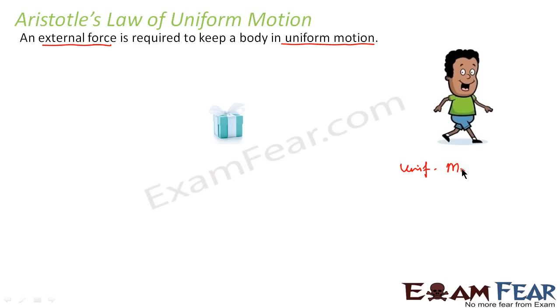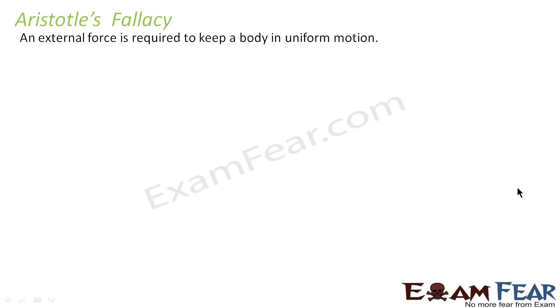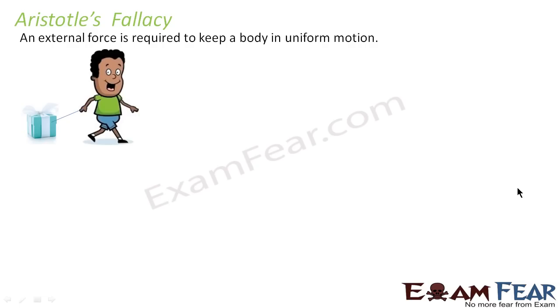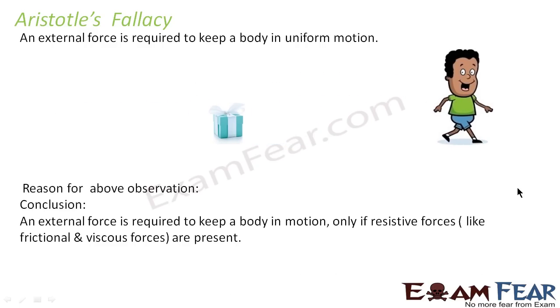If a body is in uniform motion, that means there is a force acting on it — that is what Aristotle's law conveyed. But after some time it was observed that Aristotle's law proved to be false. So what was Aristotle's fallacy — where did Aristotle fail? Aristotle's law said that an external force is required to keep a body in uniform motion. He dragged the box, and when he let it go the box stopped moving. But it was later observed that this scenario proved something else.